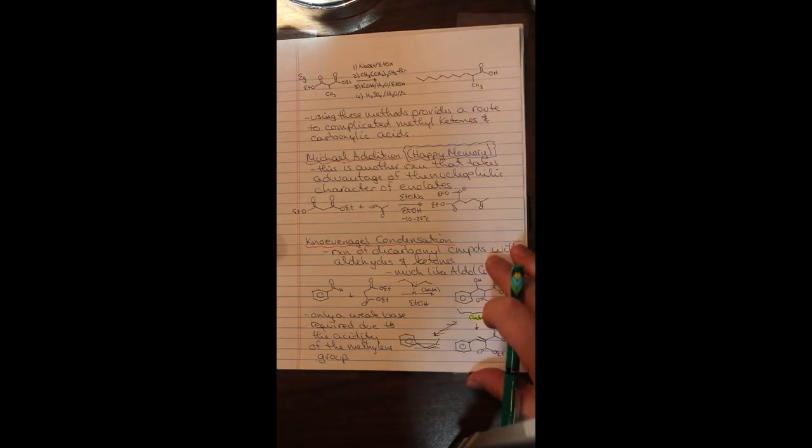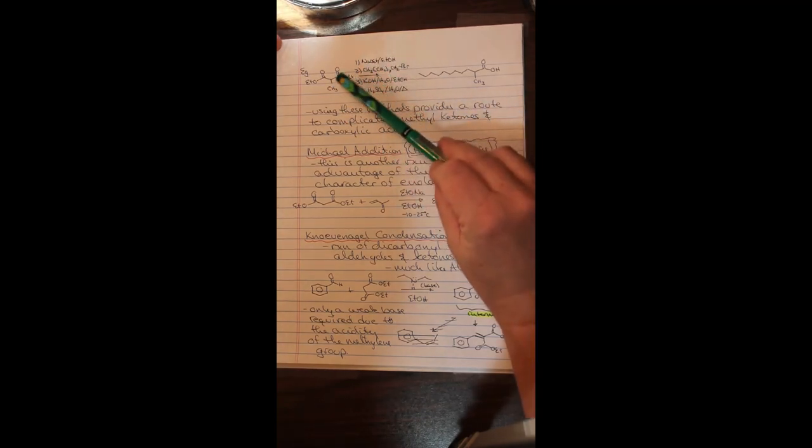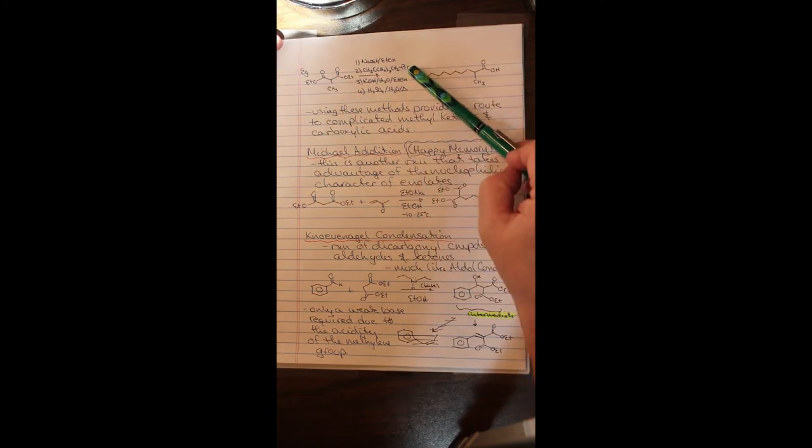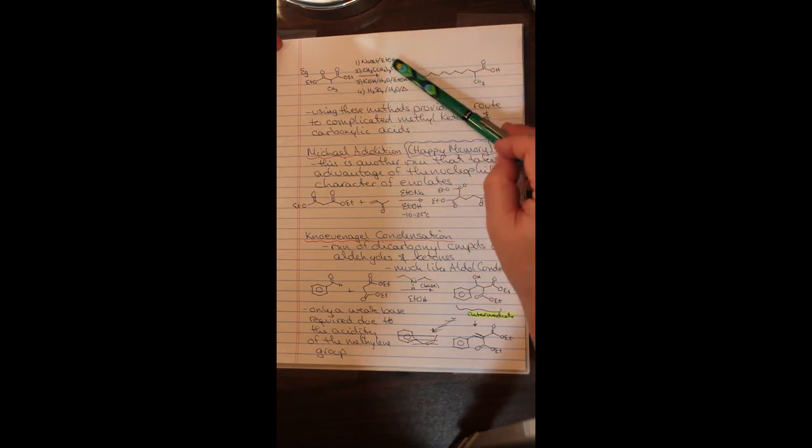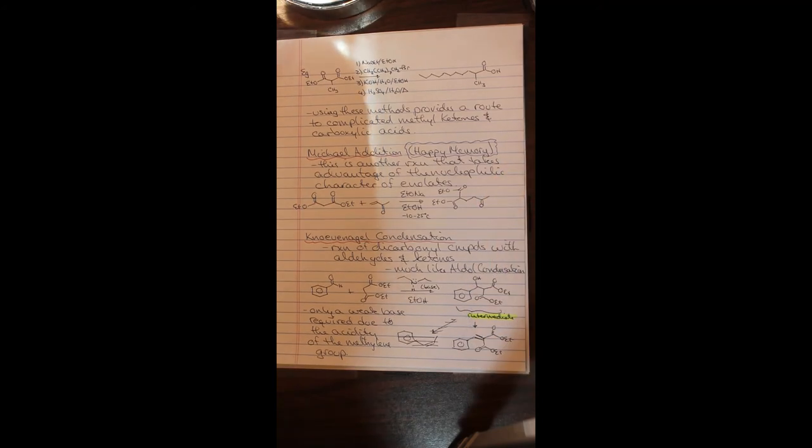So here is a reaction involving those components. We have a diester that we are treating with base to generate the enolate in this position. This enolate will then attack this one bromo nonane species, which will then add a long alkyl chain. We then hydrolyze the two esters and treat this with sulfuric acid and heat, and we decarboxylate and we generate this complex carboxylic acid. So we have now the method to generate complex methyl ketones and carboxylic acids.